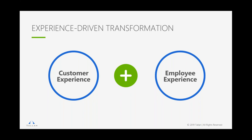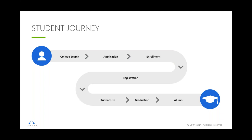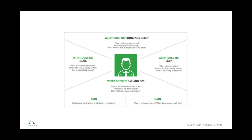Thinking about that student journey — from the college search process through application and enrollment, registering for classes, enjoying student life, hopefully graduating, and becoming alumni — these are personas. You've got to think about who it is, what do they think and feel, and pick one of those stages in the journey. Don't try to knock them all off at once, and if you do want to do multiple ones, do this process for each leg separately.